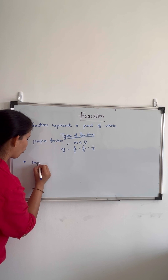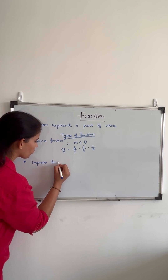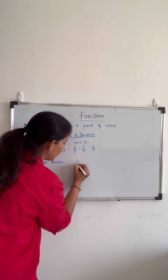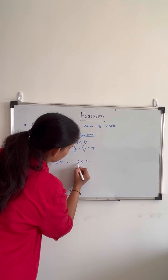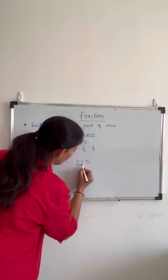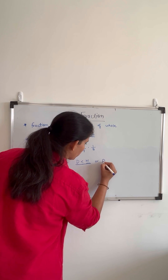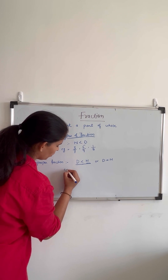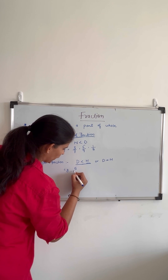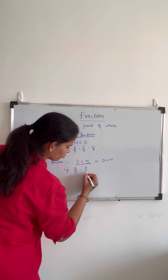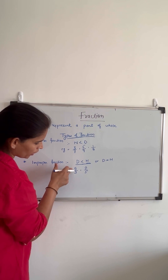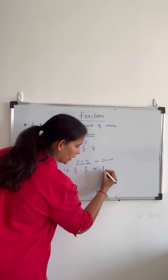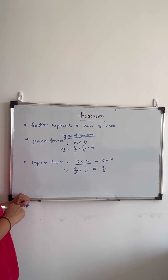The second type is improper fraction. Improper fractions are those fractions whose denominator is less than the numerator, or the denominator is equal to the numerator. For example, 5 by 3 and 7 by 5 — the numerator is larger than the denominator. This kind of fraction is called an improper fraction. We can also say that 3 by 3 is an improper fraction.